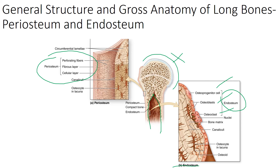The periosteum also contains different types of cells, including the stem cells of bones as well as those that form the extracellular matrix. Both the endosteum and the periosteum contain cells of the bones.